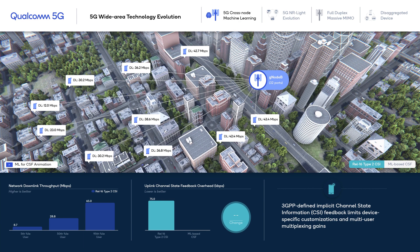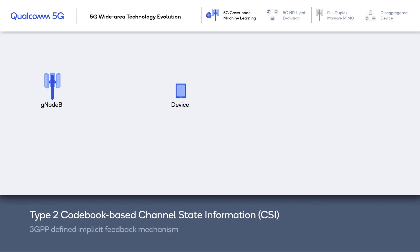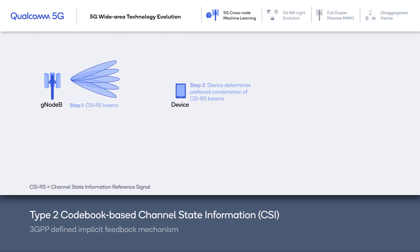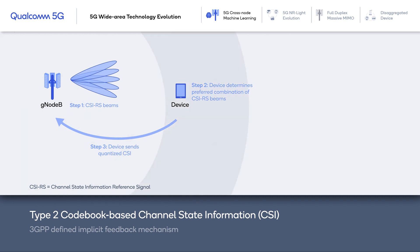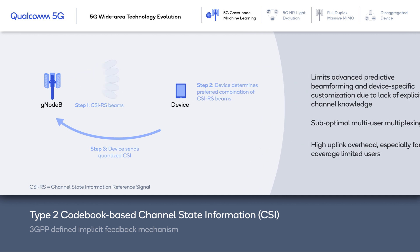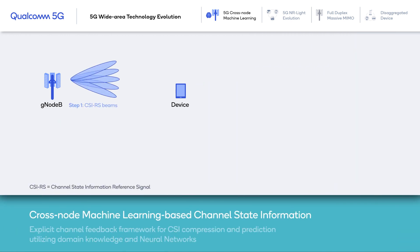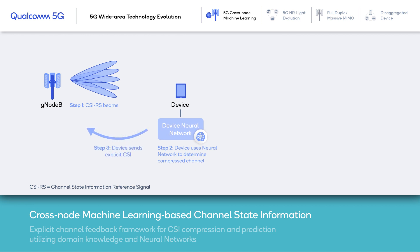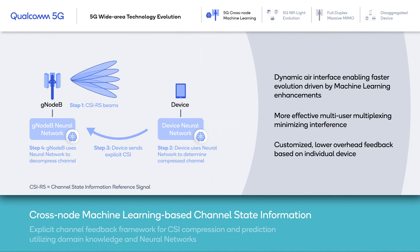We see one GNOB deployed here with 10 devices scattered across the city, sending data in both uplink and downlink directions. In the baseline release 16 type 2 codebook-based CSI, the device sends back implicit channel feedback to the network as a part of the uplink. The quantized feedback is in the form of preferred downlink beam combinations. In the second case with machine learning, the device sends explicit CSI feedback to the GNOB. This explicit channel feedback framework allows for customized low-overhead feedback based on individual device channel conditions and delivers more efficient multi-user multiplexing.